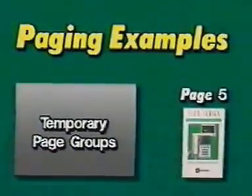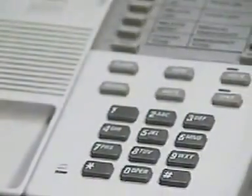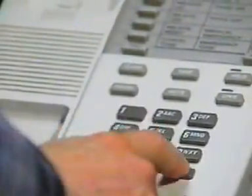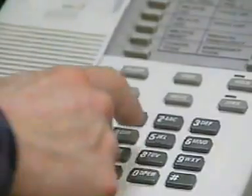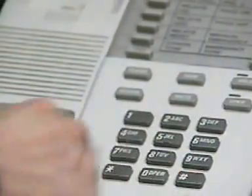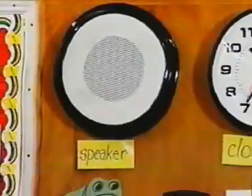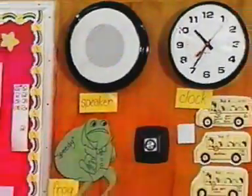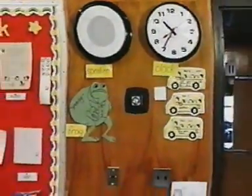Turn to page 5. Now we'll page a temporary group. To page a temporary group, lift the handset and press pound 35. Press the room number and pound for each room to be paged. Press pound again, issue the announcement and hang up. May I have your attention please? Will the custodian please report to room 101?